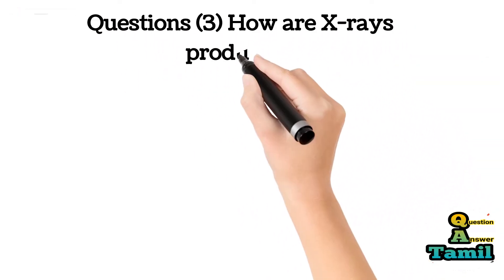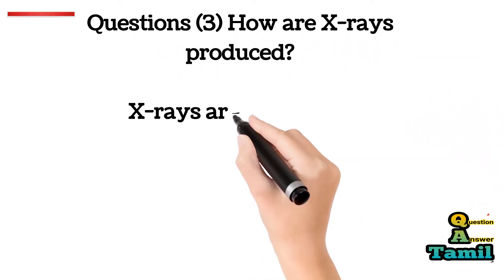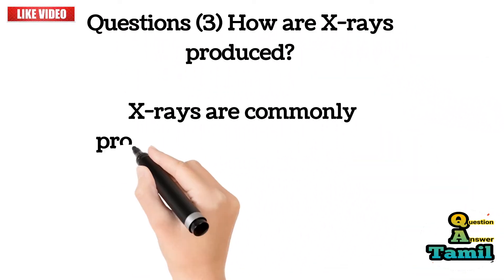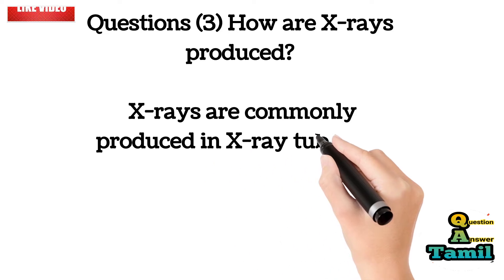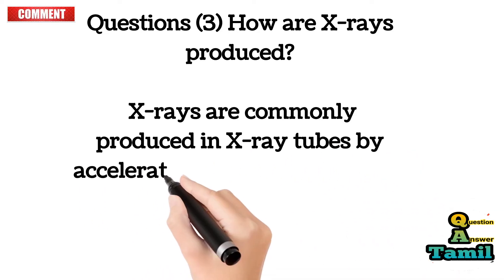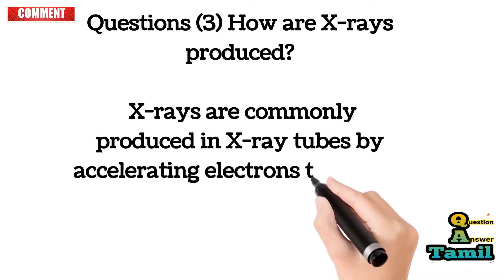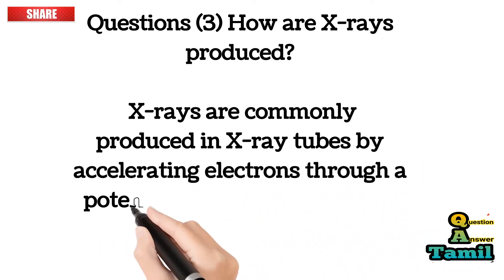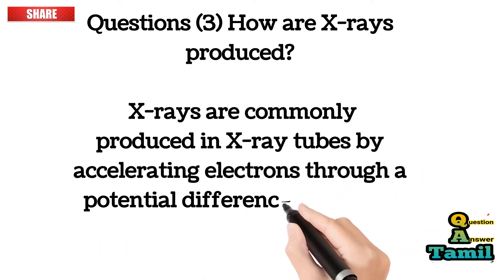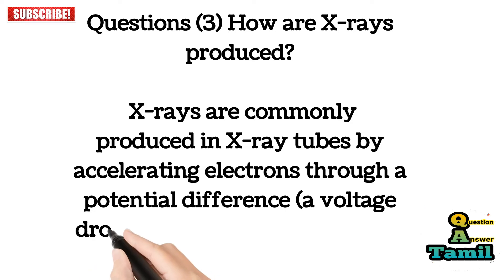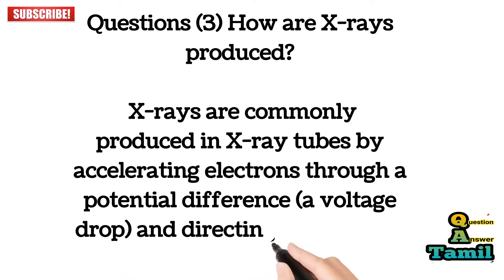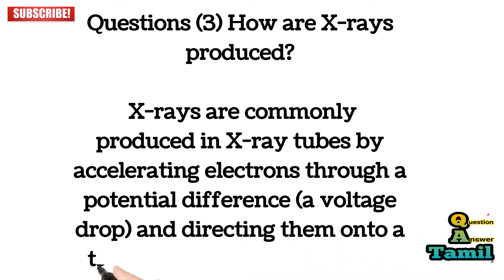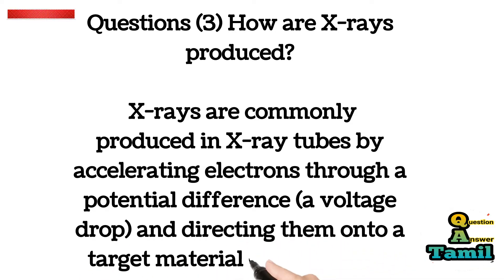Question 3: How are X-rays produced? X-rays are commonly produced in X-ray tubes by accelerating electrons through a potential difference (a voltage drop) and directing them onto a target material, i.e. tungsten.